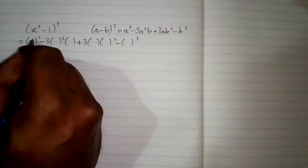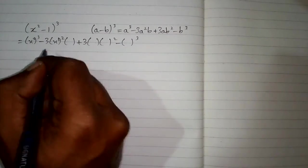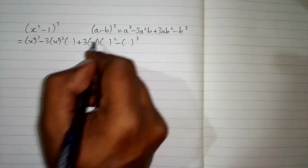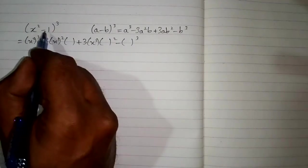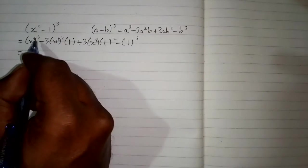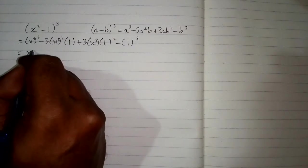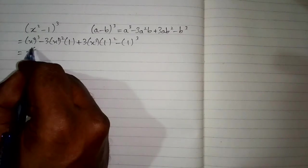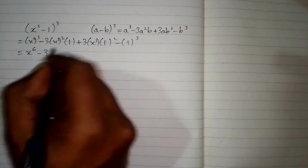We put x² in place of a and in place of b we will put 1. Now cube of x² is x⁶ because 2 multiply by 3 is 6, and the square of x² is x⁴ because 2 multiply by 2 is 4.